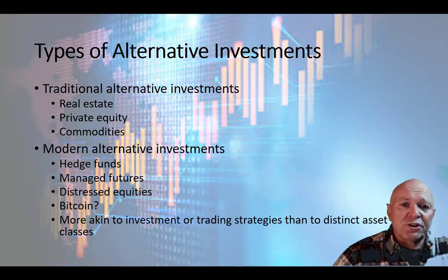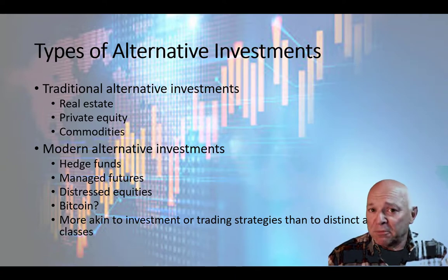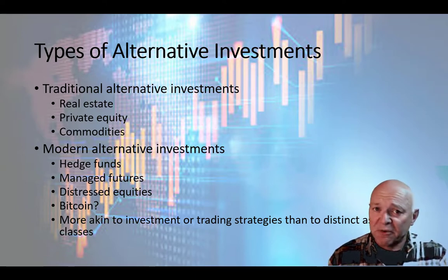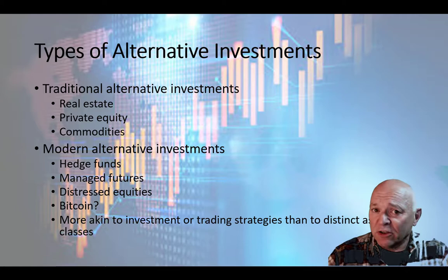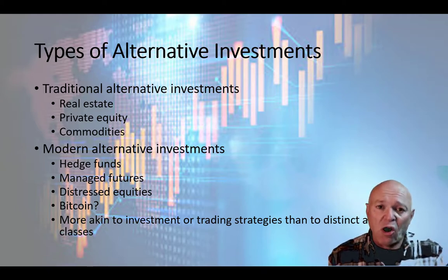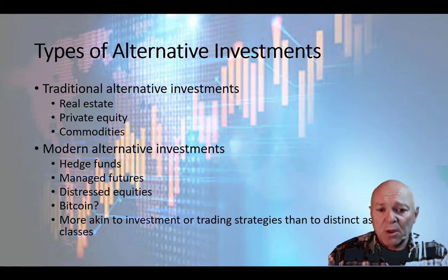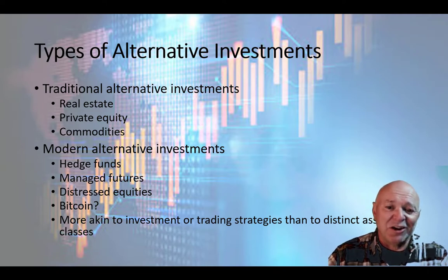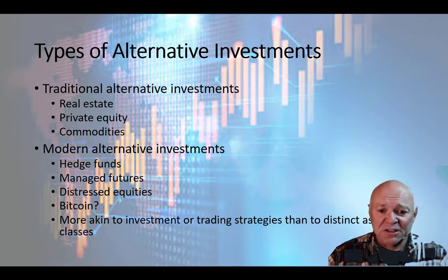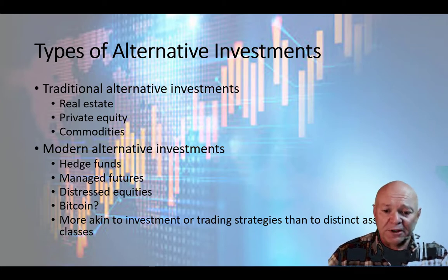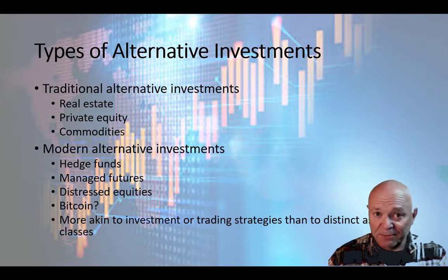Some of the most commonly cited types start with the traditional versions. A fund manager might seek diversification from stocks and bonds through both direct and indirect investments in real estate. We'll also look at private equity, which includes venture capital, leveraged buyout financing, and late-stage financing. We'll look at commodities in the next video. Modern alternative investments include hedge funds, managed futures, distressed equities, and bitcoin — though some of these are more like trading strategies, especially managed futures and hedge funds.